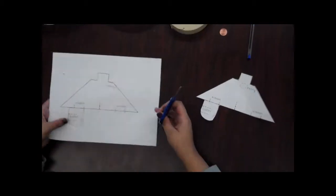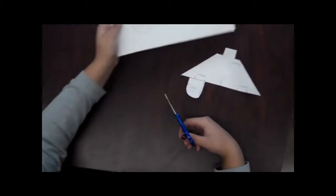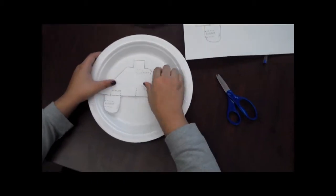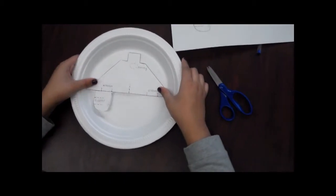First, cut out the glider from the template. Then, place your template on top of the styrofoam plate. Make sure the tail fits within the plate. This will help your glider fly.